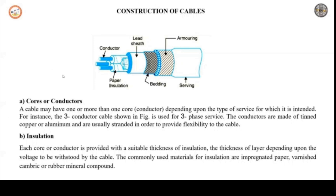Next is the metallic sheath. The insulated conductors are covered by a lead sheath or aluminum sheath. This provides mechanical protection but mainly restricts moisture and other gases from reaching the insulation.